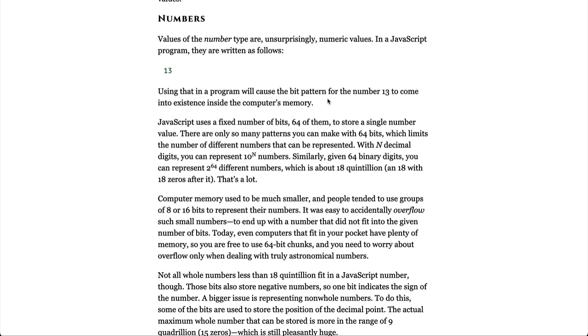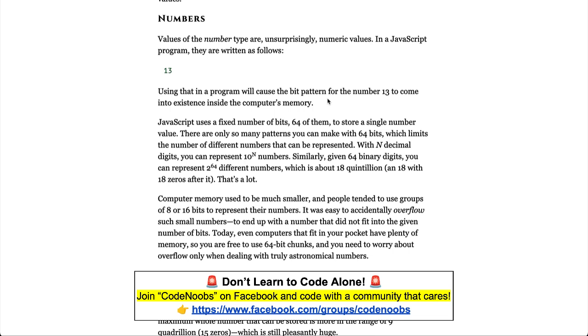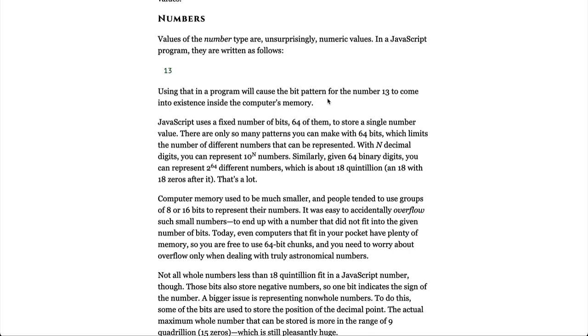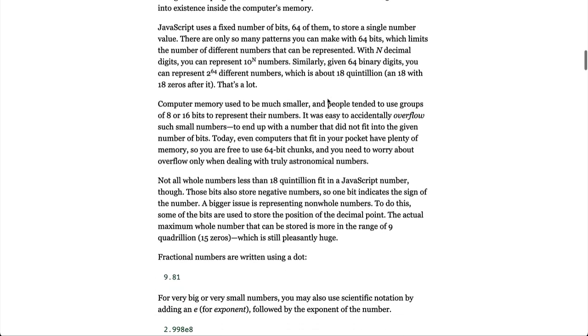JavaScript uses a fixed number of bits, 64 of them, to store a single number value. There's only so many patterns you can make with 64 bits, which limits the number of different numbers that can be represented. With n decimal digits, you can represent 10 to the n numbers. Similarly, given 64 binary digits, you can represent 2 to the 64 different numbers, which is about 18 quintillion, 18 with 18 zeros after it. That's a lot.